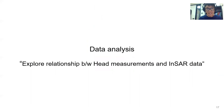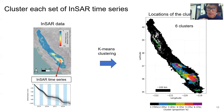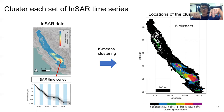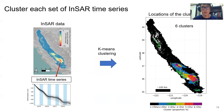We performed a data analysis to explore the relationship between head measurements and InSAR data. Note that InSAR data can contain both changes in hydraulic head (poroelastic response) and the loading response. We applied a k-means clustering algorithm to the InSAR time series across many locations, asking for six different clusters. Each location's time series is classified into one of six clusters. Even without any spatial constraint, you can already see spatial correlation in the results, which is interesting.